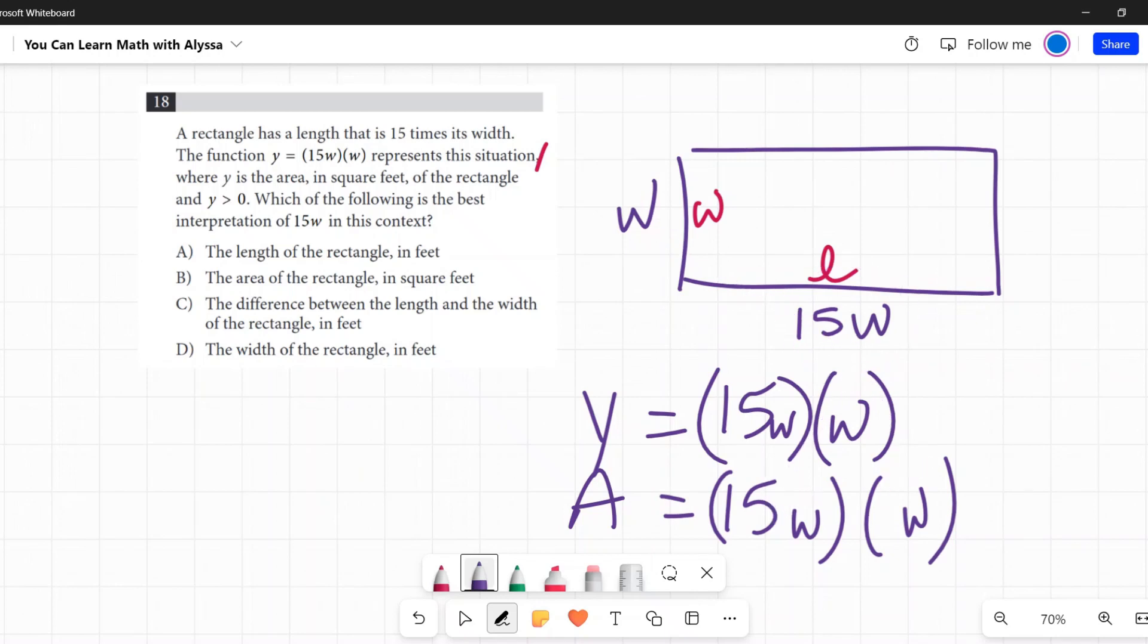So y is greater than zero. Yep. Area is greater than zero. Which of the following is the best interpretation of 15w in this context? Well, if I'm looking at it before I even look at the answers, 15w is how long the length of this rectangle is. 15w is my length.